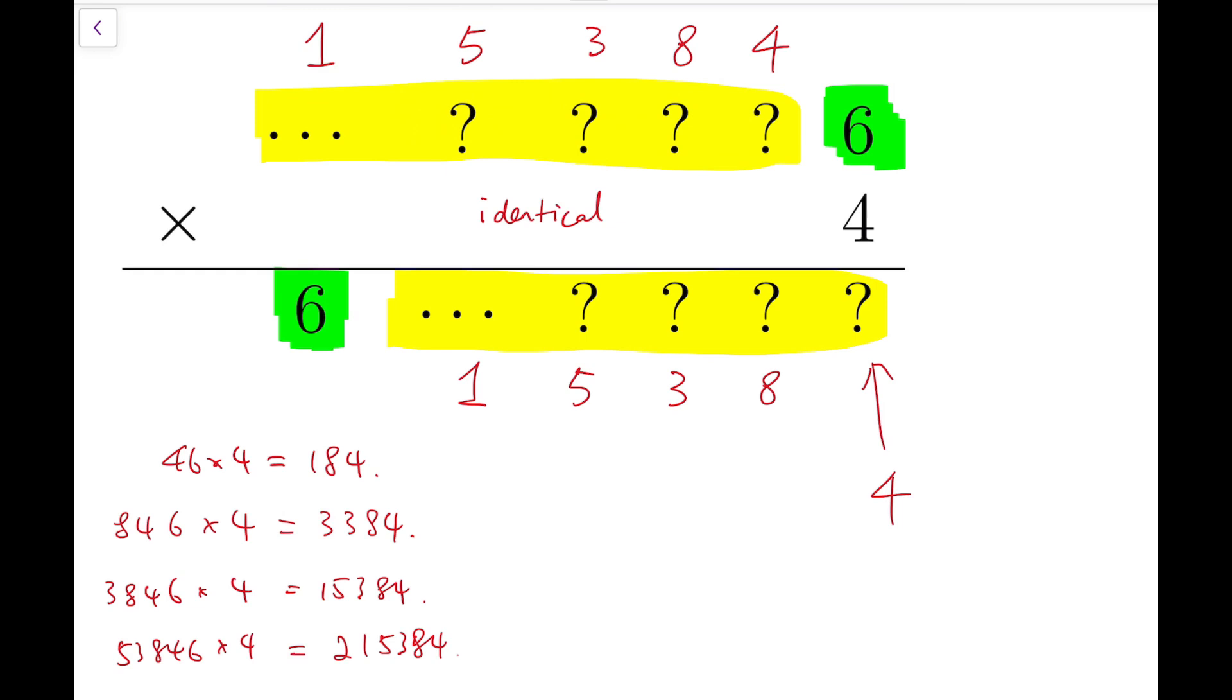So we have 5 digits altogether. Now notice that the product of 153846 and 4 is exactly 615384. So in fact, this is our solution. And so our final answer is that the required number is 153846.